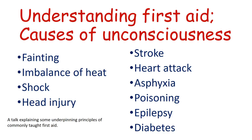Fainting is often caused by what we call a vasovagal episode. The vagal part relates to the vagus nerve, which is a parasympathetic nerve — that branch of the nervous system that slows things down. It slows the heart rate and breathing. If the heart rate slows enough, it's not pumping out enough blood to perfuse the brain. The vaso part stands for vasodilation, meaning the blood vessels widen, the blood pressure drops, and the pressure is no longer sufficient to perfuse the brain. The patient will fall over, but typically when they fall flat, the brain is re-perfused and they regain consciousness fairly quickly.